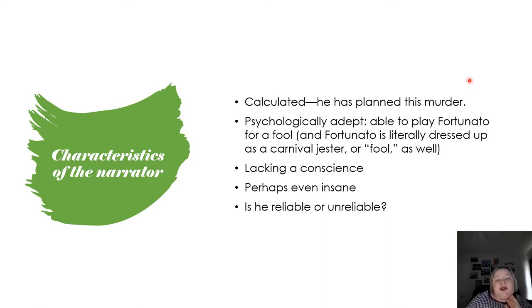Montresor is psychologically adept. He's able to play Fortunato for a fool, and Fortunato is literally dressed up as a carnival jester, which is a type of fool. And so, the psychological insight into Montresor's character is something that Edgar Allan Poe is very good at. And he was one of the first American authors to actually delve into the human mind in the way that he did.